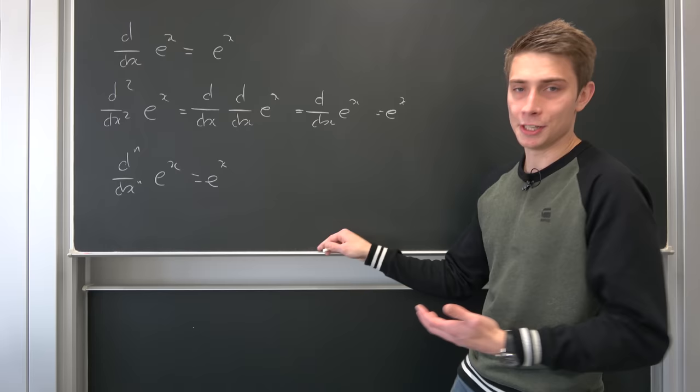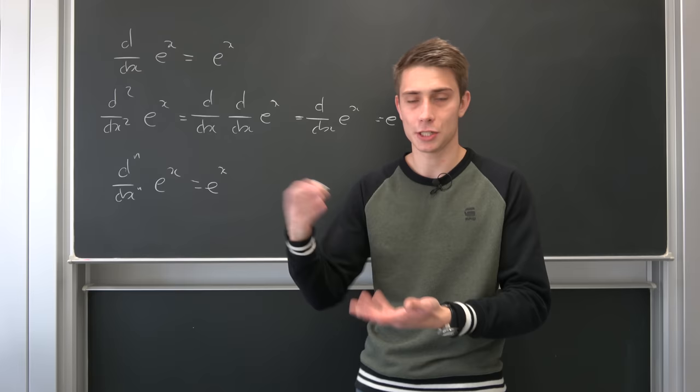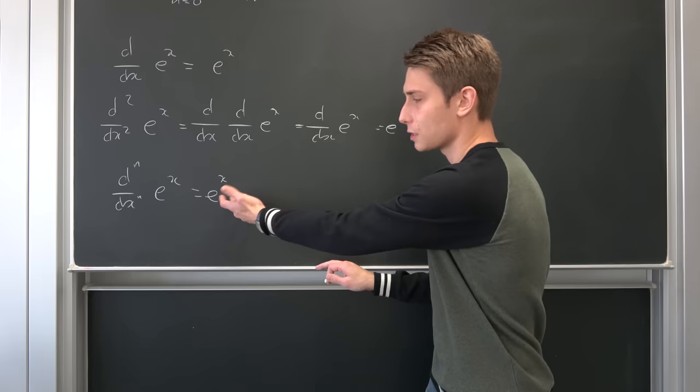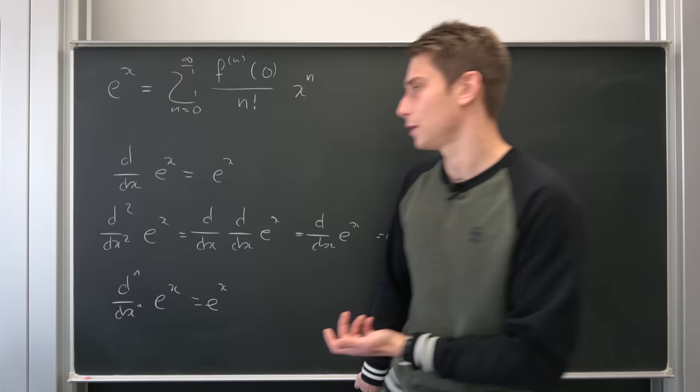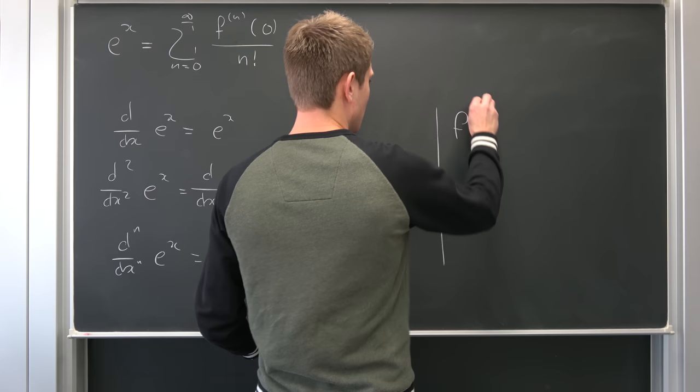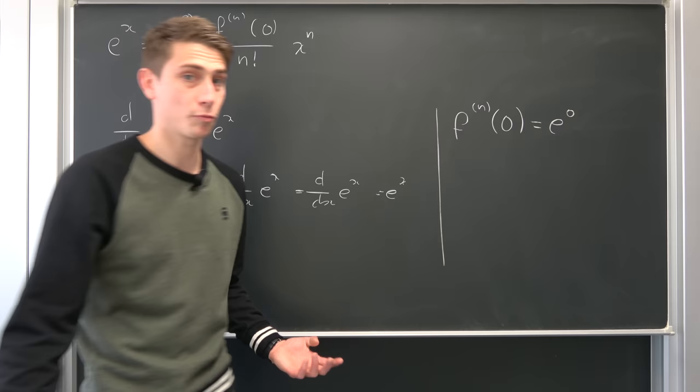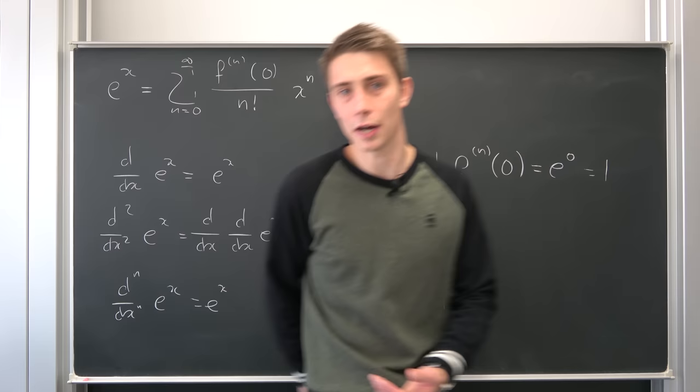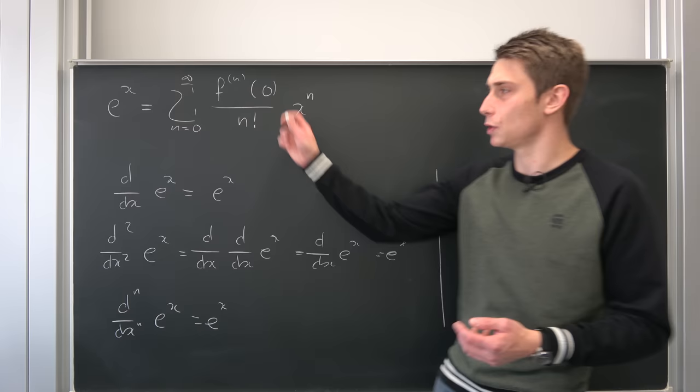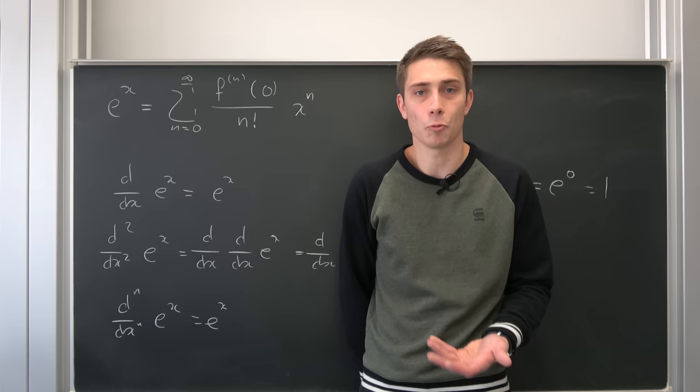So we already know now, by the definition of the exponential function being when differentiated the function itself, we already know that this is just going to be the function itself. But what is the nth derivative evaluated at the point zero? Well, what is going to happen if you plug zero in here? This is just going to be e to the zero power all the time, but this is nothing but one. Yeah, it's as easy as it is. So we know that no matter what derivative you evaluate at the point zero, it's always going to be one.